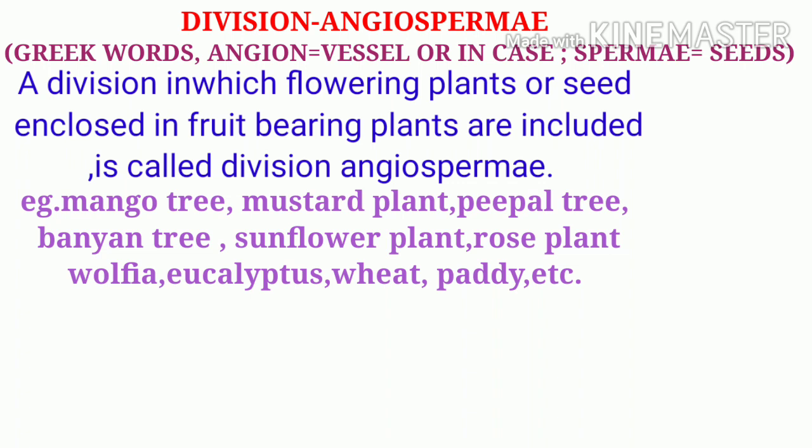What is the meaning of Division Angiospermia? The word Angiospermia is derived from two Greek words: angion and sperma. Angion means vessel or enclosed case, sperma means seed. It means those plants whose seeds are enclosed in some vessel-like or case-like structure.